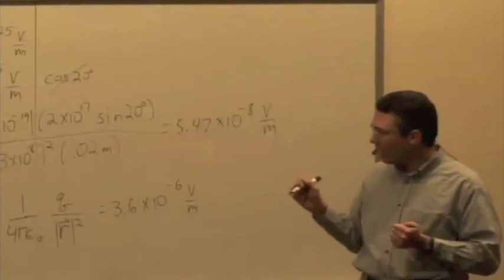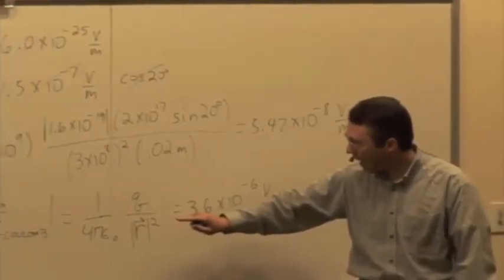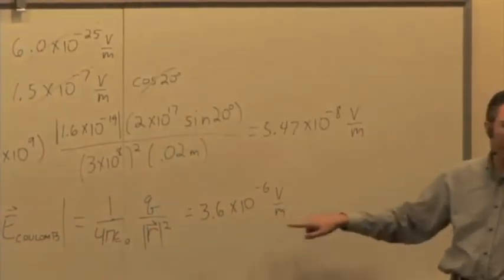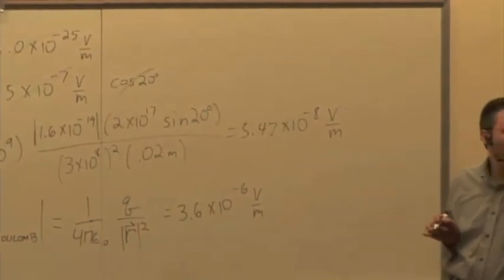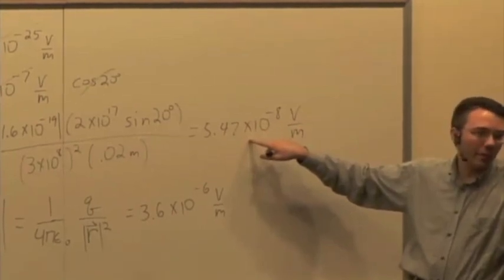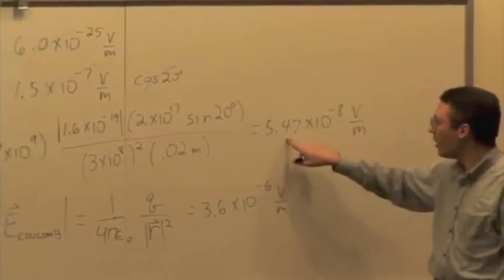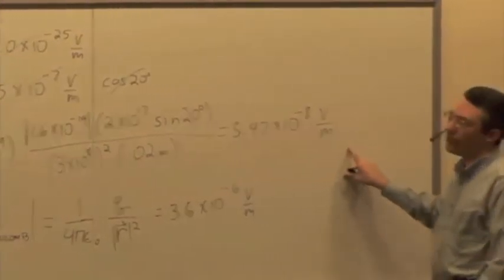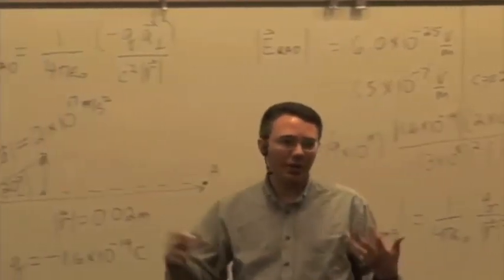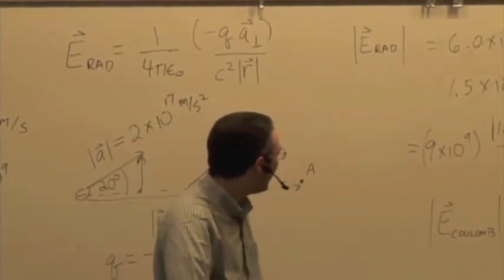But what happens as you get farther and farther away? If I increase the distance here by a factor of 10, the Coulomb electric field would go down by a factor of 100. If I increase the distance here by a factor of 10, it would go down by a factor of 10, right? Because the distance dependence is only 1 over r. So as you get farther and farther away, the radiative component will eventually start to dominate, because it decreases with distance at a much lower rate than the Coulomb field.